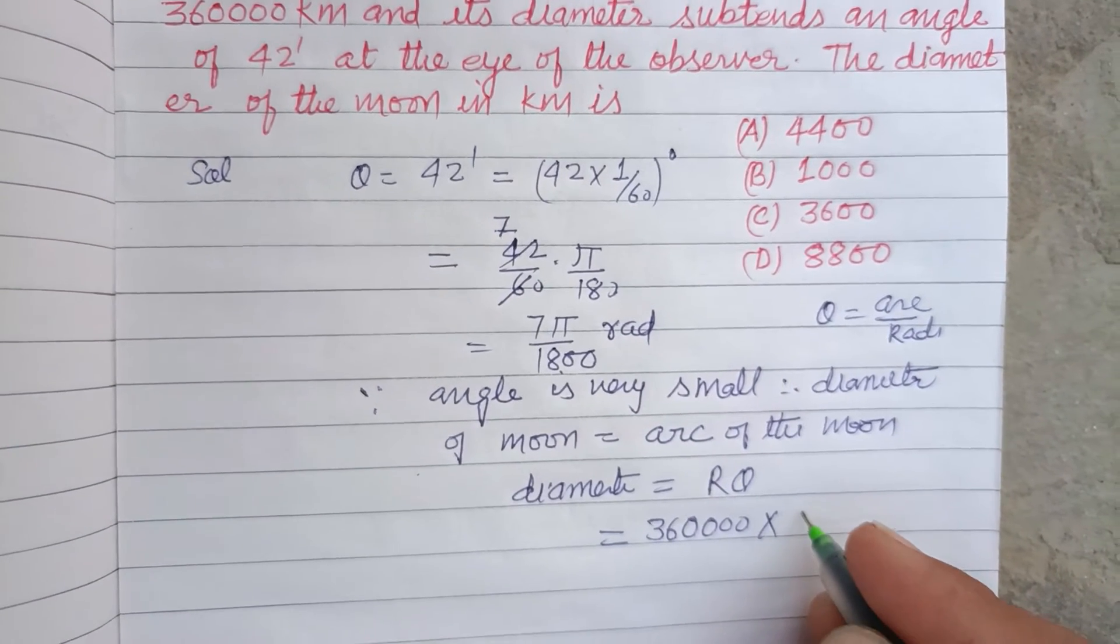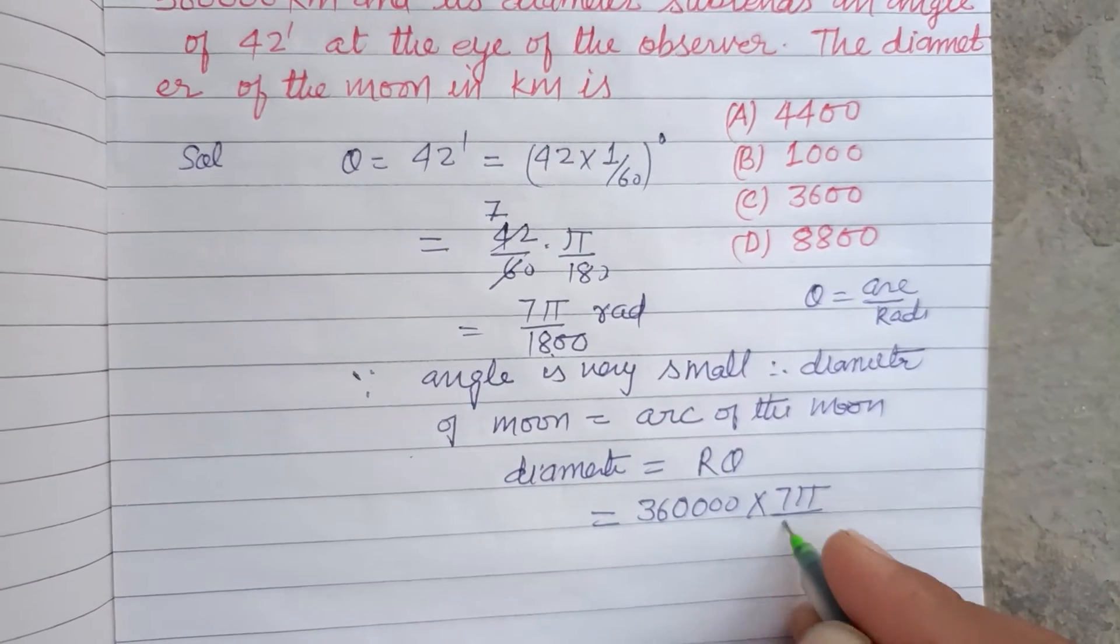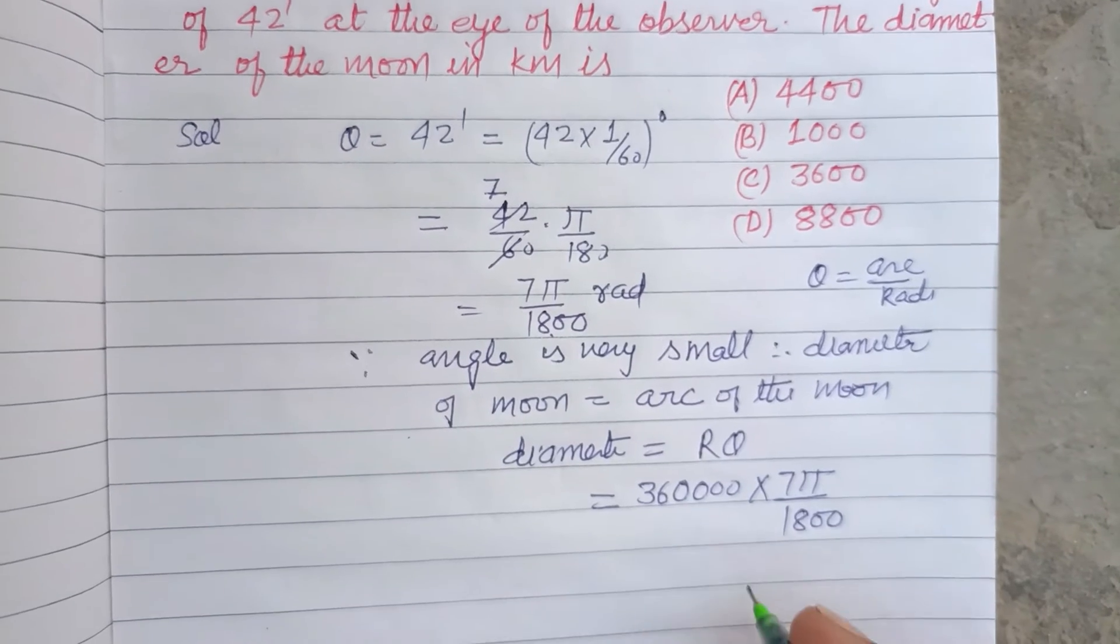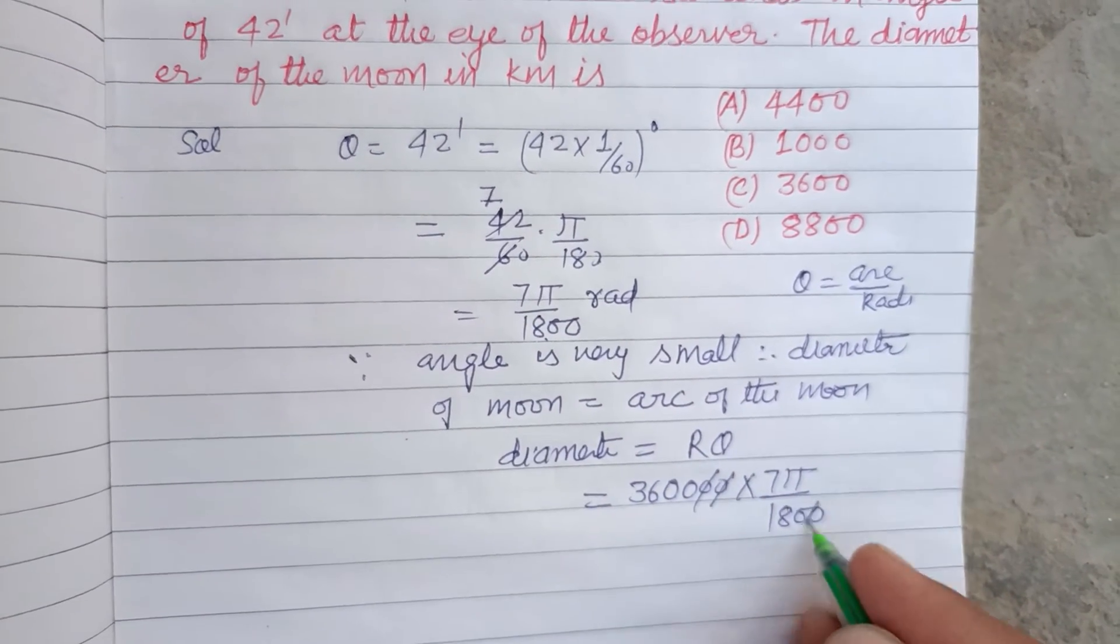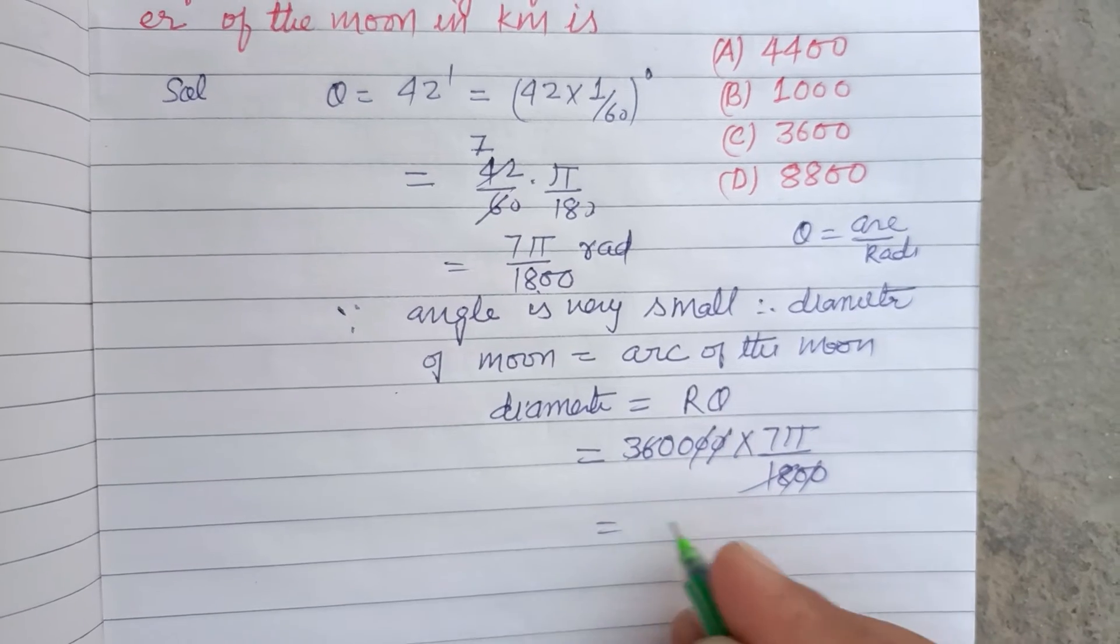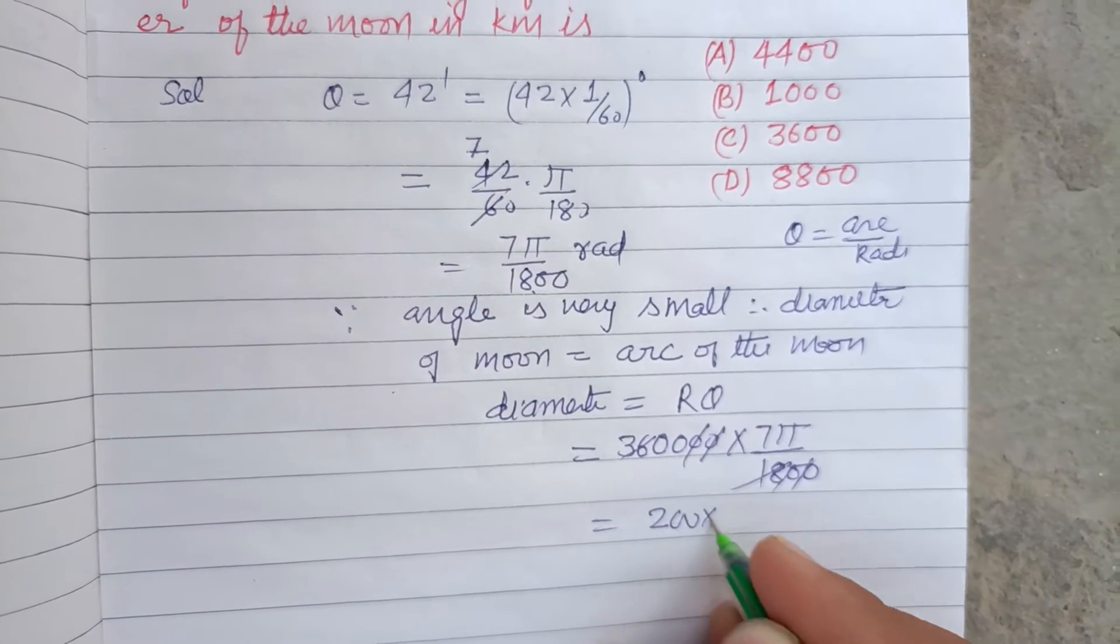Into theta, which is 7π upon 1800. So here, 200 cancels with 1800 to give 360. So 200 times 7 times π.